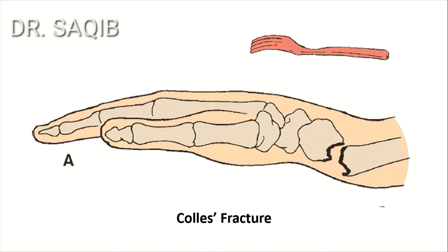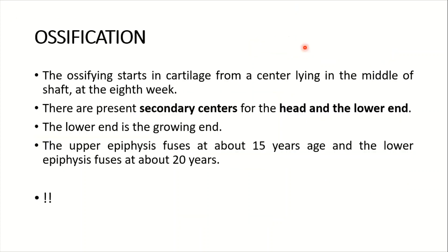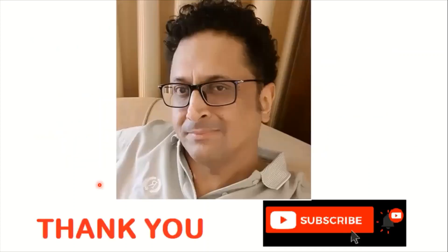For ossification: ossification starts in cartilage from a center lying in the middle of the shaft at the eighth week. There are secondary centers for the head and the lower end. The lower end is the growing end. The upper epiphysis fuses at about 15 years of age and the lower epiphysis fuses at about 20 years. Thank you very much for listening. We will be doing more very soon, and stay tuned and subscribe to my channel.